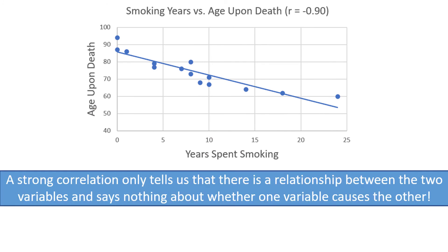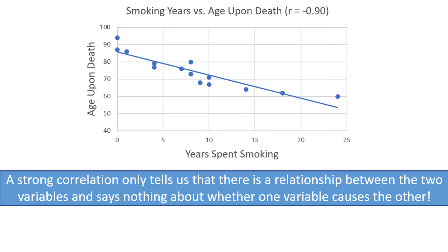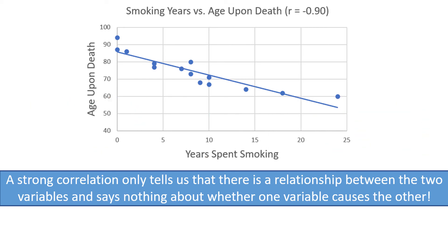A strong correlation like we have only tells us that there is a relationship, in this case a negative relationship, between the two variables, and says nothing about whether one variable causes the other.